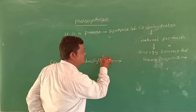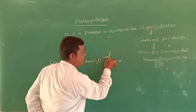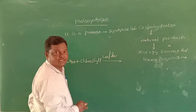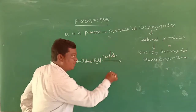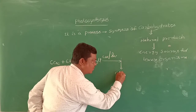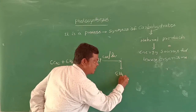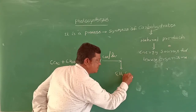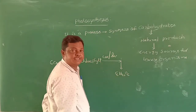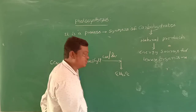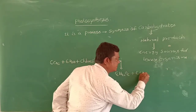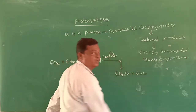In the presence of UV light, or sunlight (hν), we are getting carbohydrate — either glucose or fructose, C₆H₁₂O₆ — plus 6 moles of oxygen molecules.